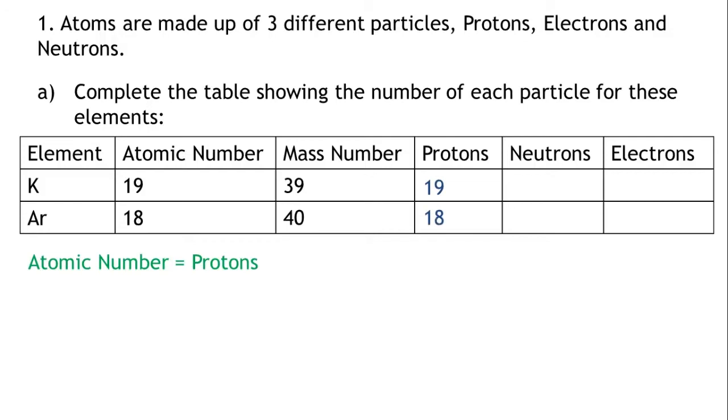The number of protons equals the number of electrons in an atom. Therefore, the number of electrons in potassium, K, is 19, and the number of electrons for argon, Ar, is 18.